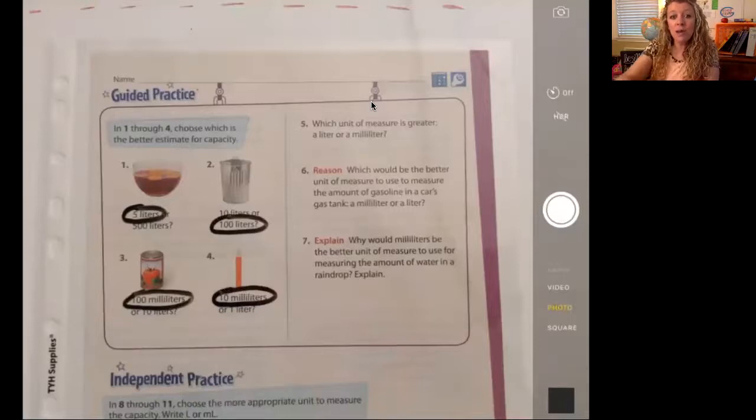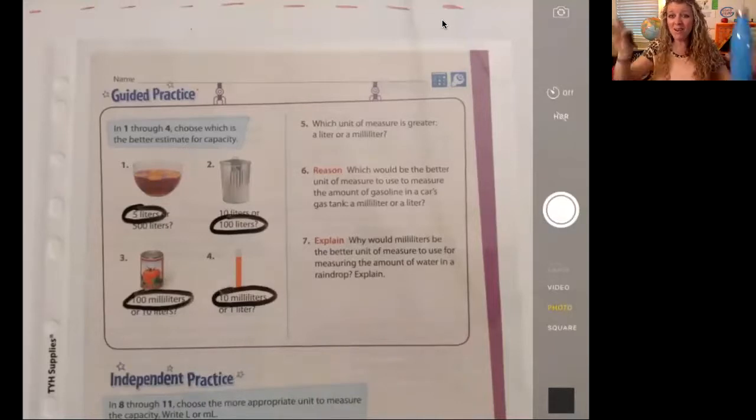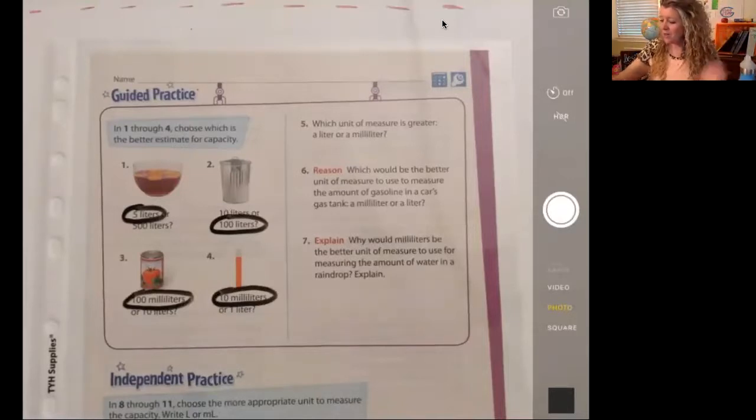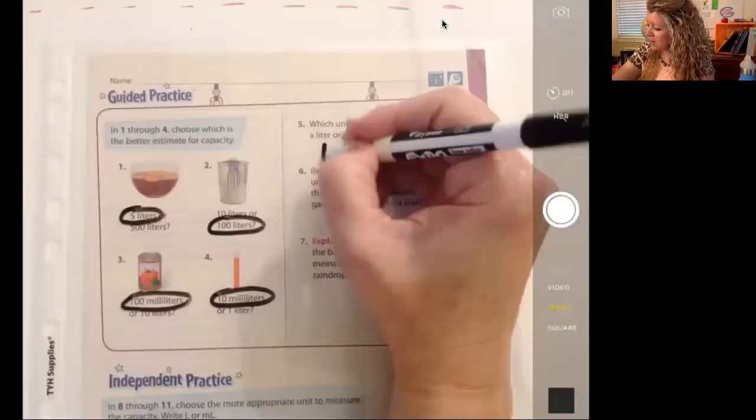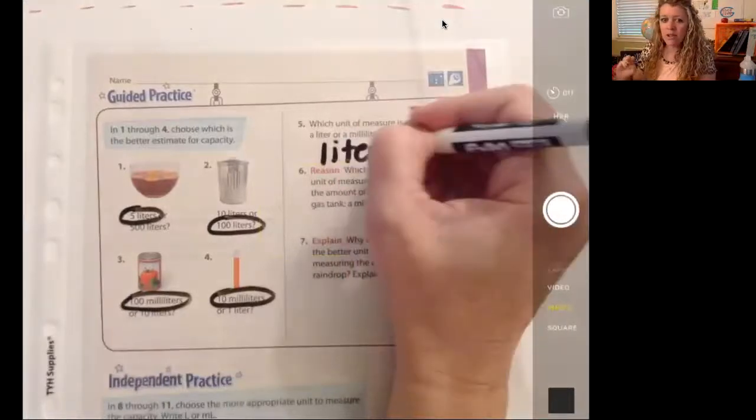Let's look at number five. Which unit of measure is greater? Which one's bigger? One liter or one milliliter? Well, come on. Now we know that. Which one's bigger? The dropper or the water bottle? It's the water bottle. So the liter is a greater unit of measure.